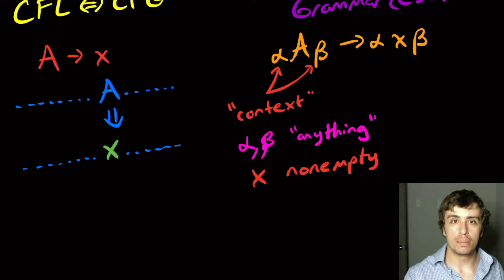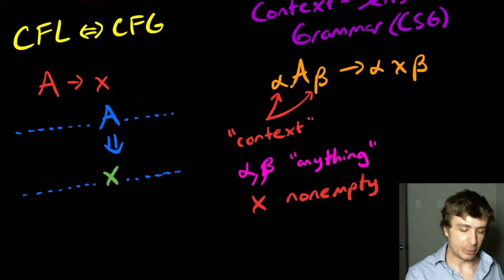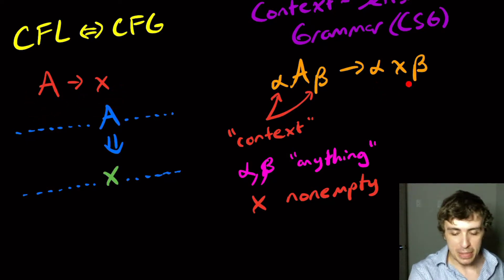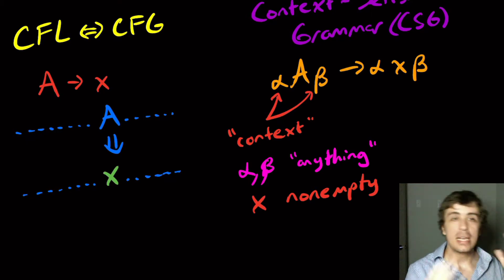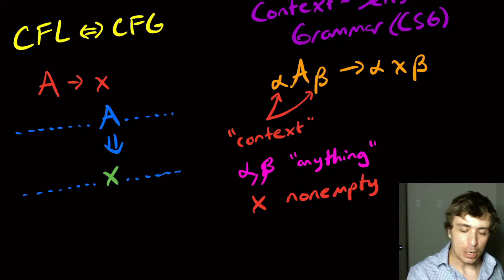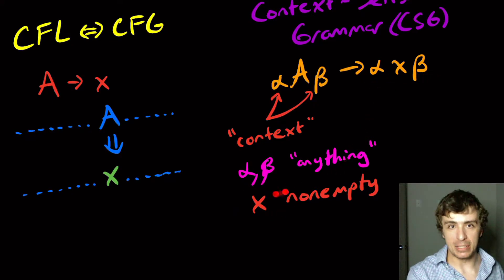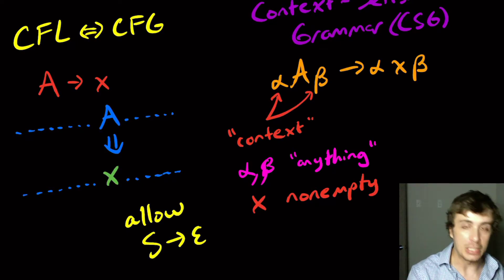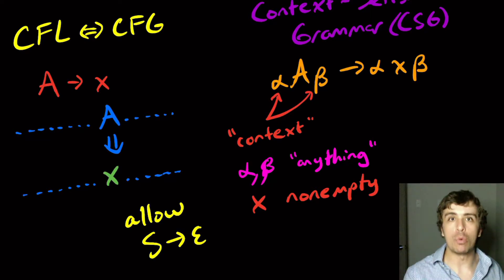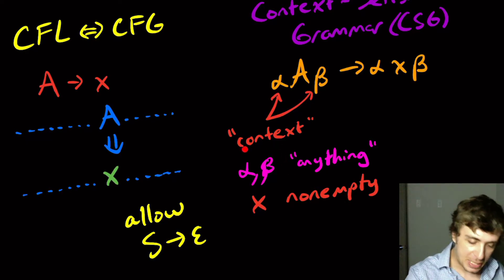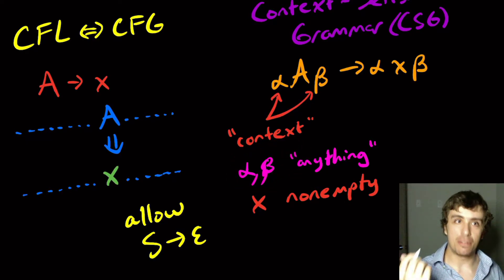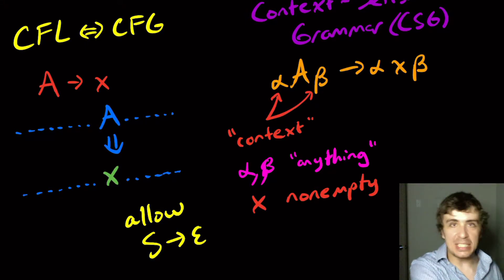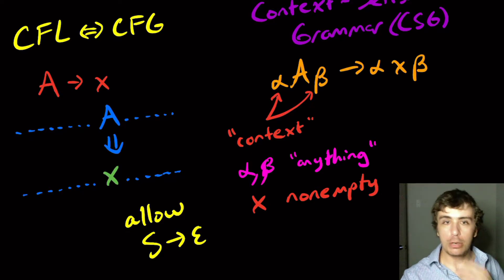Alpha and beta can even be the empty string. If we let alpha and beta be the empty string, we recover the context-free grammar definition, because nothing on both sides is the same as the CFG rule. So every context-free language is already a context-sensitive language, apart from this one peculiarity where the right-hand side has to be non-empty. We handle that by allowing the start variable to go to the empty string. So every context-free grammar is already a context-sensitive grammar.